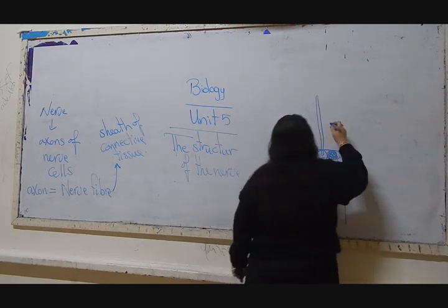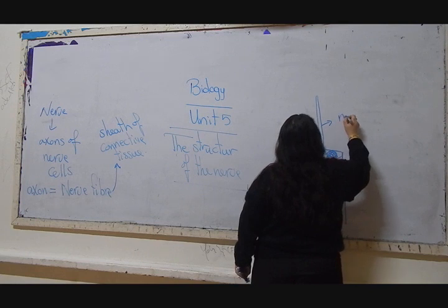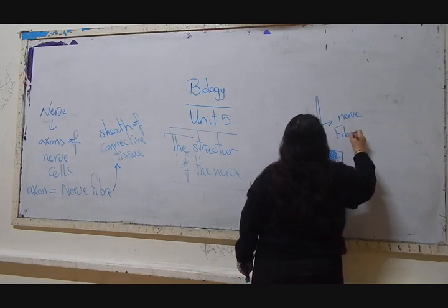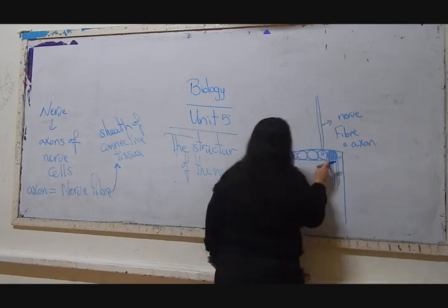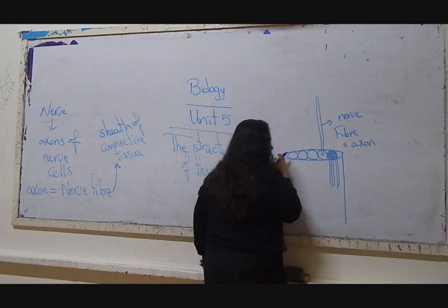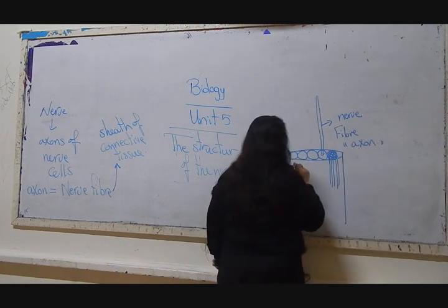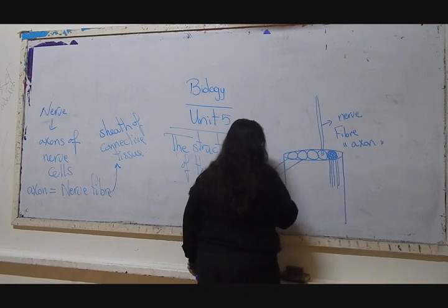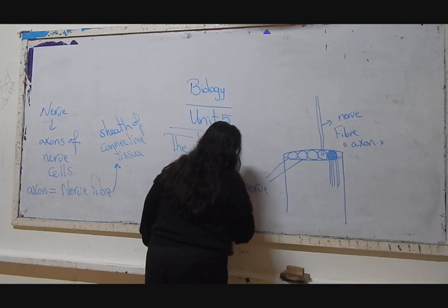We will consider this. Nerve fiber which is axon. So each bundle of these is filled with axons or nerve fibers. Those are called nerve bundles.